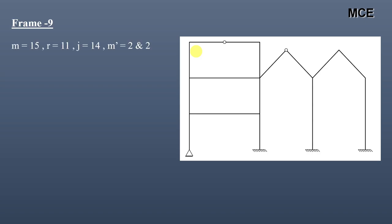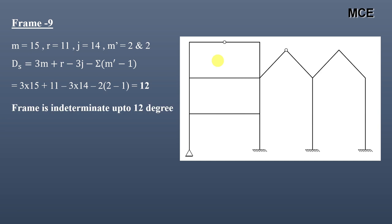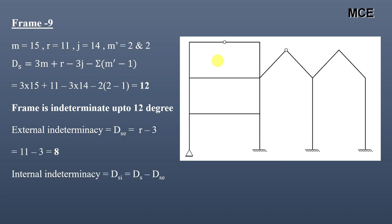For Frame 9, we can see it has a total of 15 members, 11 reactions, 14 joints, and 2 internal hinges. The number of members meeting at both internal hinges is 2, so m′ = 2 and 2. The value of ds = 12, so this frame is indeterminate to 12 degrees. External indeterminacy = 11 − 3 = 8. Internal indeterminacy = 12 − 8 = 4.